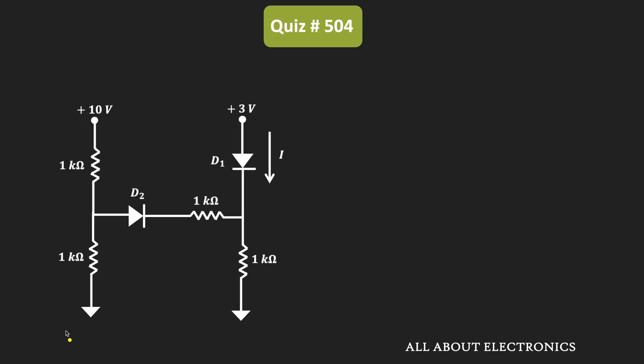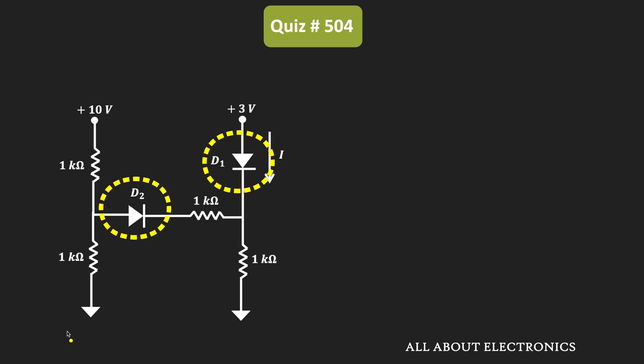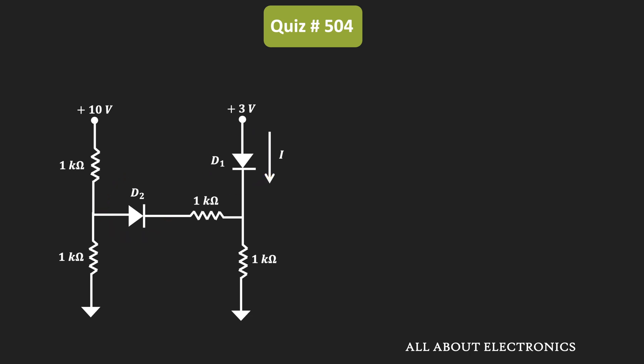Before finding the current through diode D1, we should first determine whether diodes D1 and D2 are conducting or not. Let us assume that both diodes D1 and D2 are in the OFF condition. If they are in the OFF condition, they will act as an open circuit.